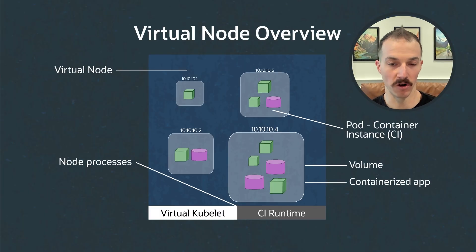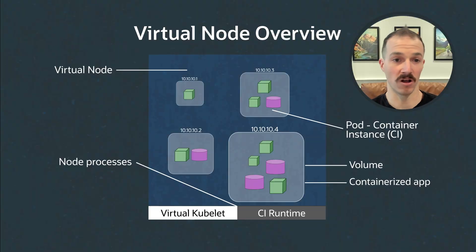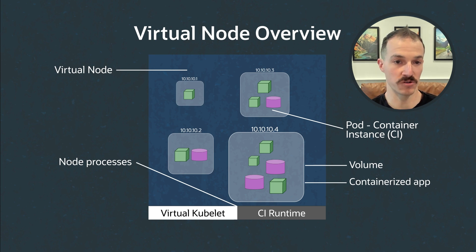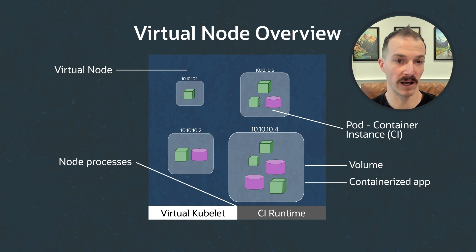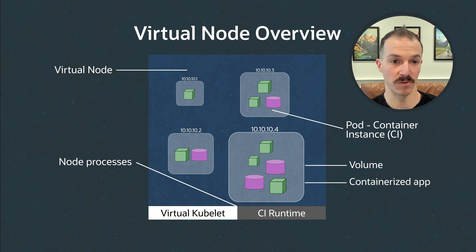A virtual node is a new type of node that looks and acts just like a normal node in Kubernetes. If you run kubectl get node, you will see a virtual node alongside traditional nodes and they look the same. One key difference is that virtual nodes are fully serverless and fully managed by OCI, so you no longer have to worry about patching infrastructure. Unlike a traditional node which runs pods via a local container runtime like Docker or CRI-O, virtual nodes rely on container instances for the container runtime. Virtual nodes act as a bridge between Kubernetes and OCI container instances to schedule and run workloads for customers.